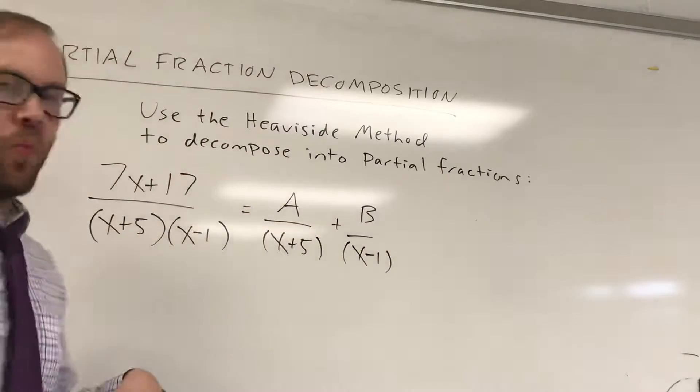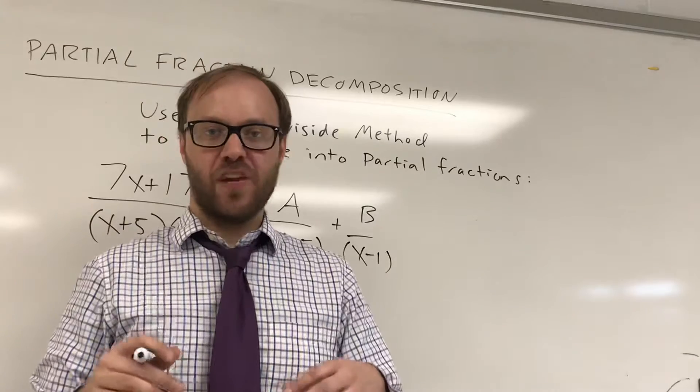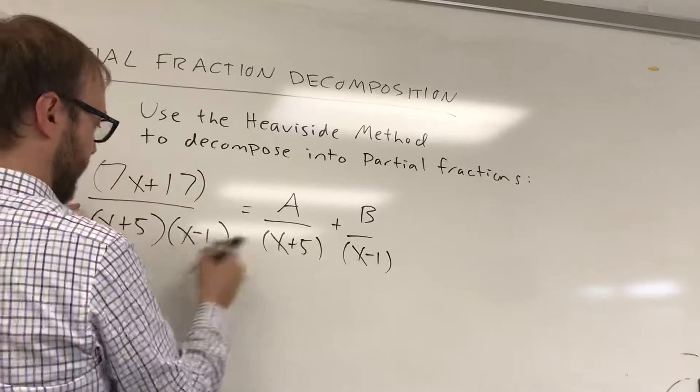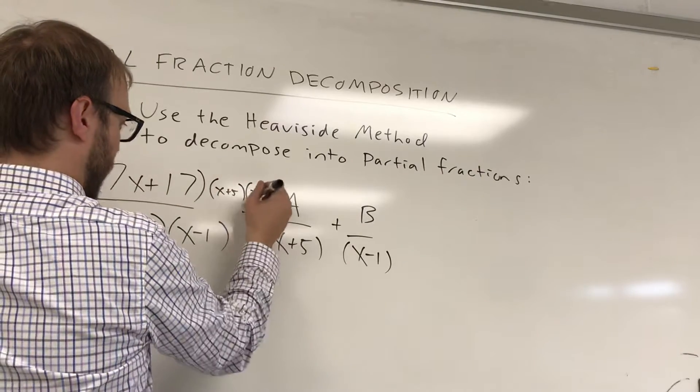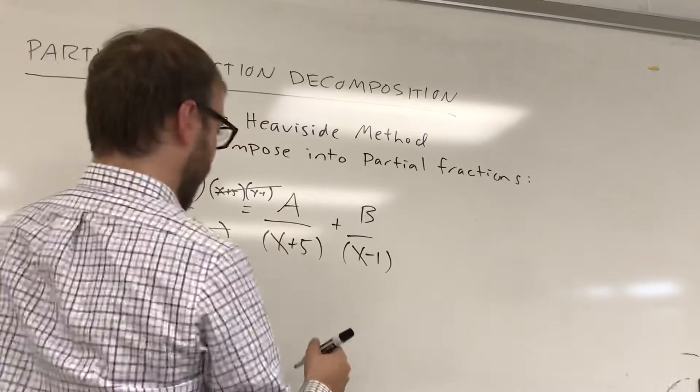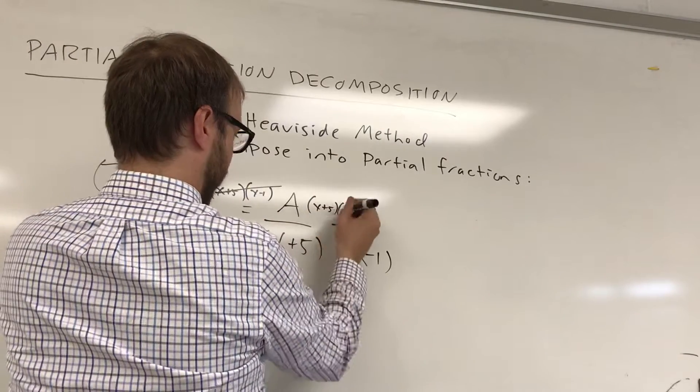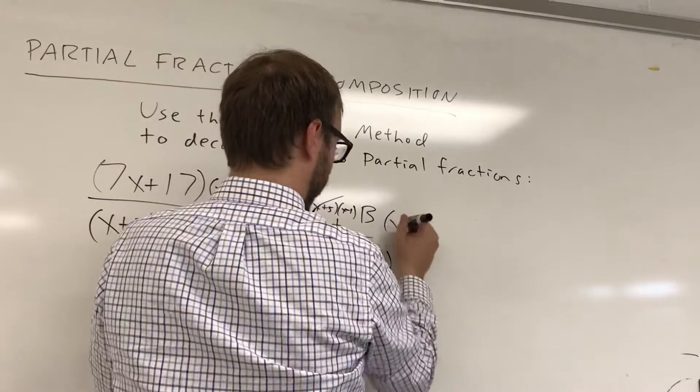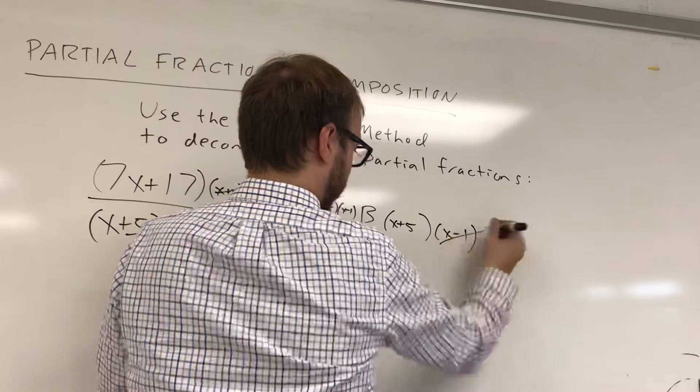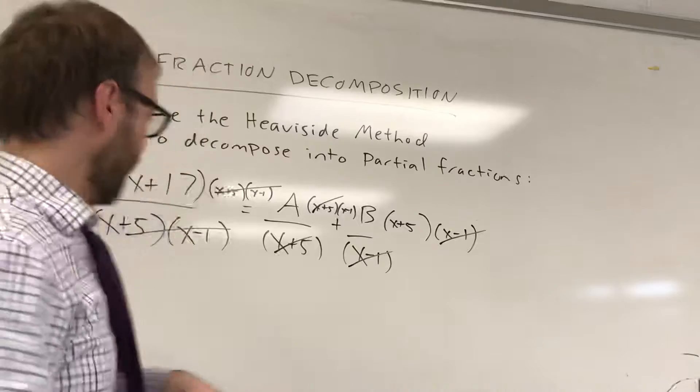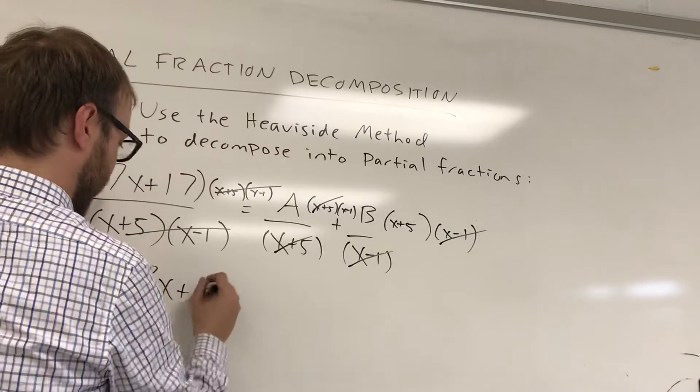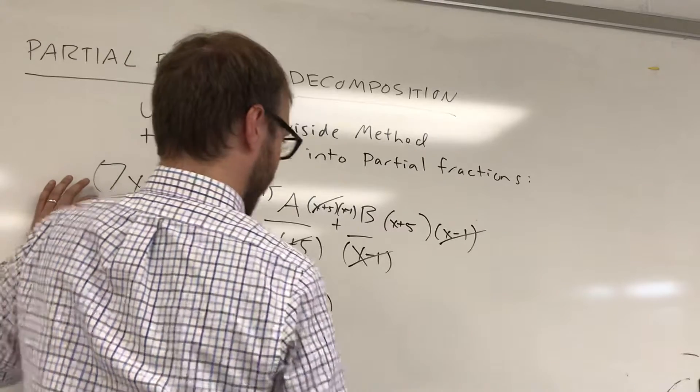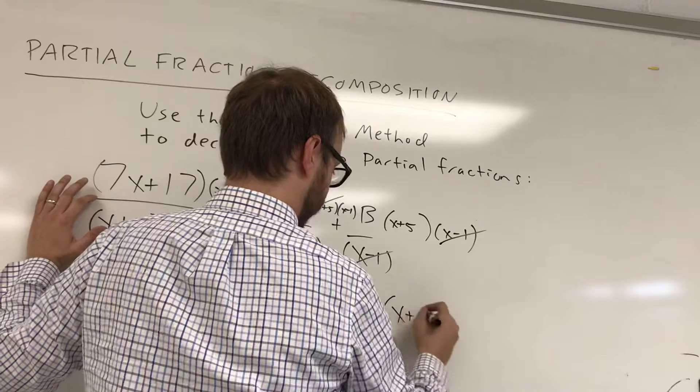And if you remember, one of the options we could use here is to multiply the numerators by the common denominator. And so the common denominator here is going to be x plus 5 times x minus 1. And what's going to happen is that's going to knock out that denominator. If we multiply by x plus 5 times x minus 1 here, it's going to knock out the x plus 5 denominator. If we multiply this by x plus 5 times x minus 1, we're going to knock out the x minus 1. And what we're left with is this. We're left with 7x plus 17 is equal to A times x minus 1 plus B times x plus 5.